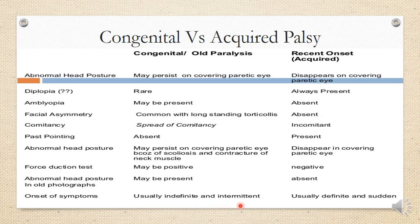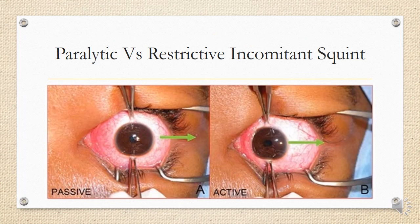Regarding onset of symptoms: in congenital cases the patient cannot say exactly when it started — it happens on and off and the onset is indefinite and intermittent. In acquired cases, the patient reports a definite time and period — they say it was sudden, for example: 'One day I woke up and suddenly saw everything double and couldn't move my right eye to a particular side.' In congenital cases they might say it is since birth, or that it started gradually and has been present for a long time.